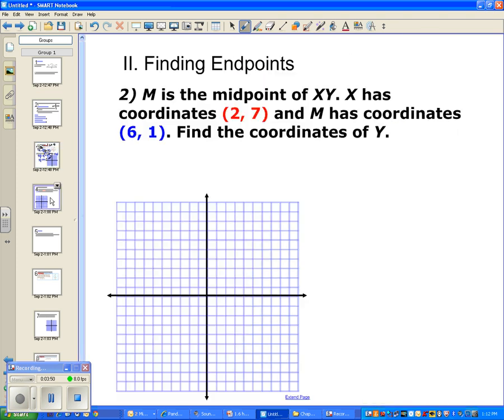Okay, so finding endpoints. That's the second thing we're going to do. This one's a little bit different. This one, it gives you the midpoint. M is the midpoint of XY. X has coordinates 2, 7, and M, remember M is your midpoint, has coordinates of 6, 1. Find the coordinates of Y. So this time they already give us the midpoint. We want to work backwards and find out what the other endpoint is. So let's write down what we have. We have x is at 2, 7.